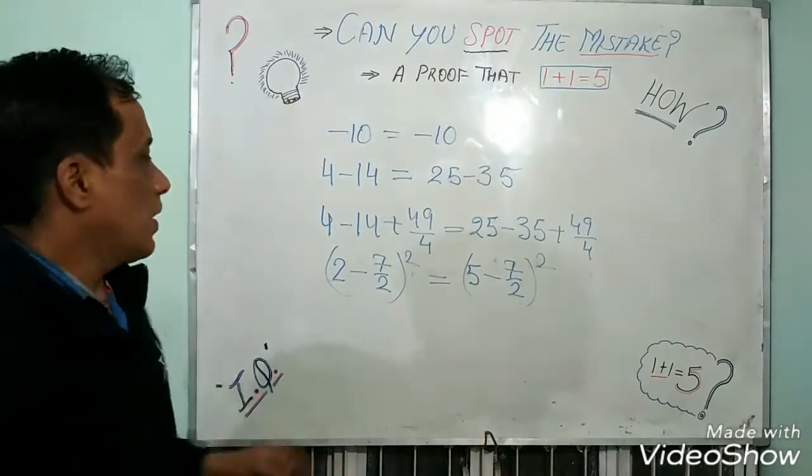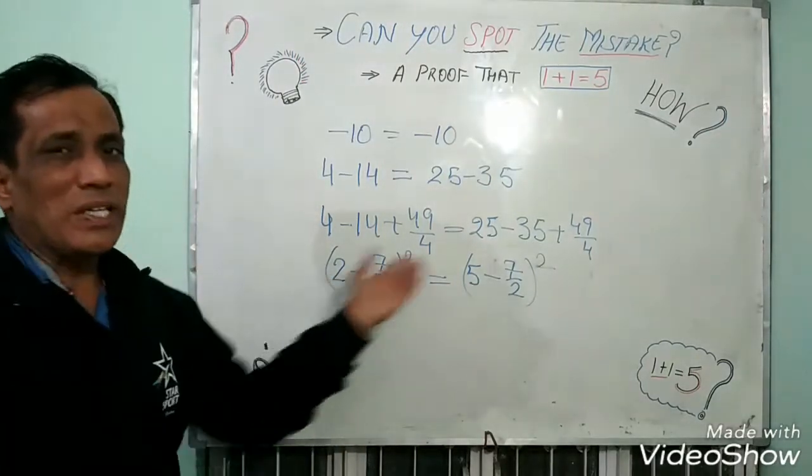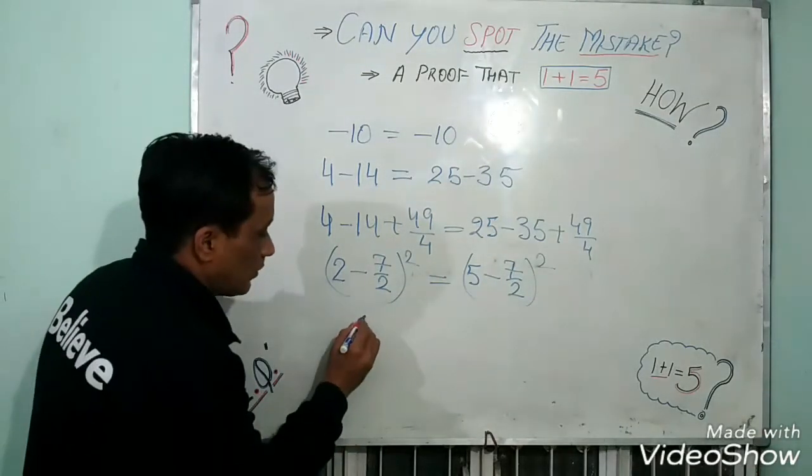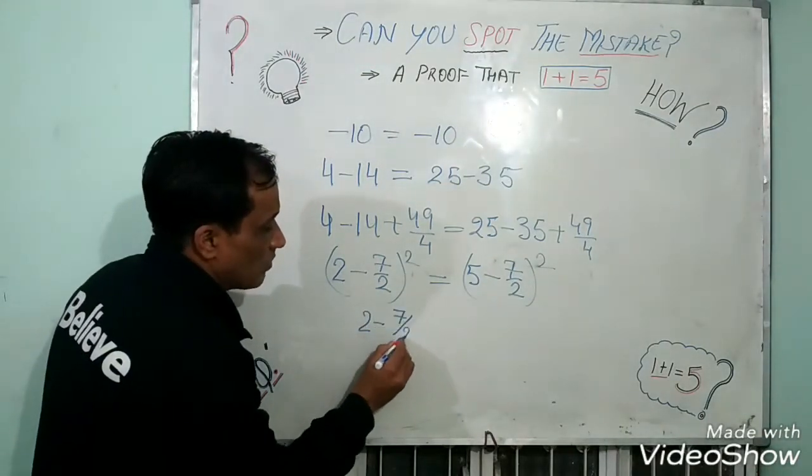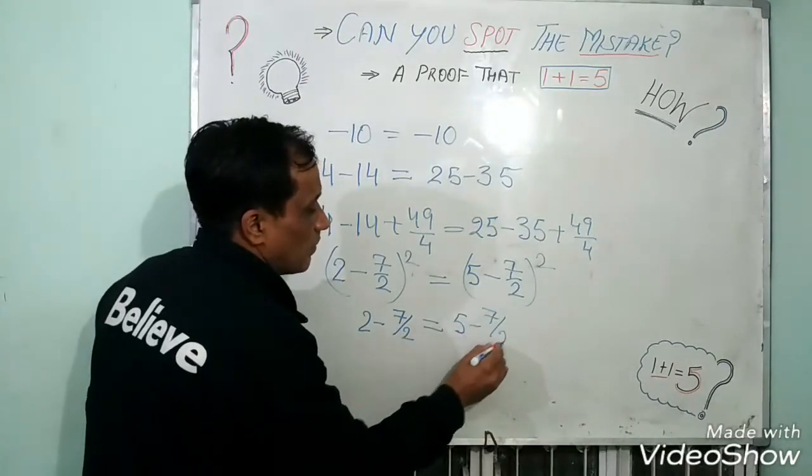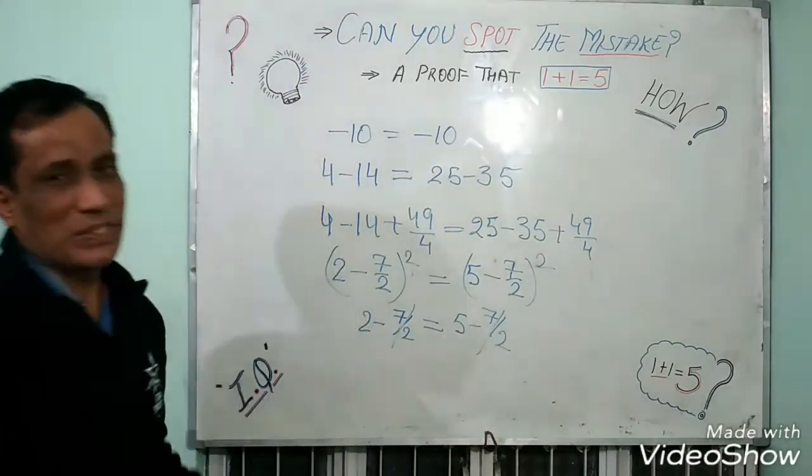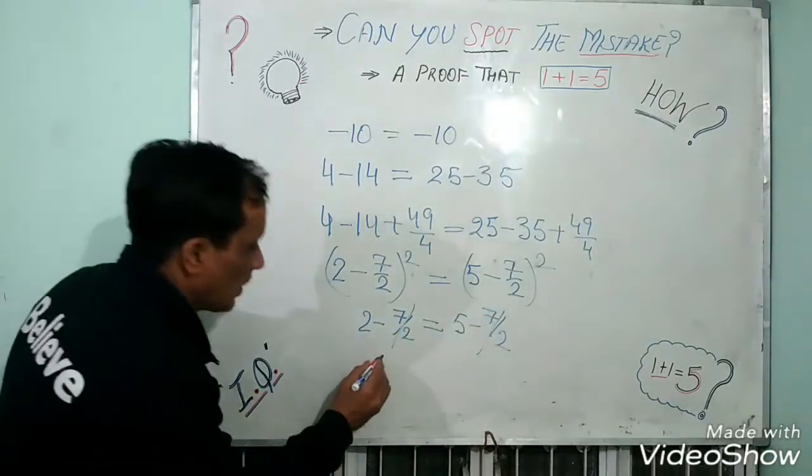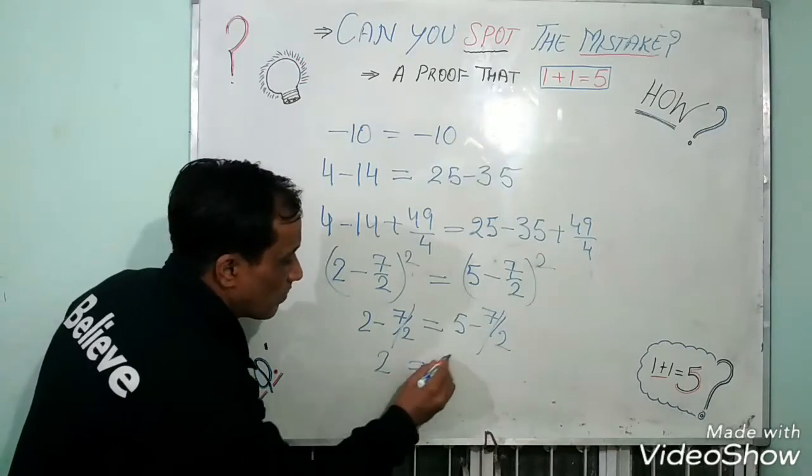Completing the square. If I am adding 2 sides to the square root, means taking the square root on both sides, this will be 2 minus 7 by 2 is equal to 5 minus 7 by 2. 7 by 2, 7 by 2 is equal to 5, left hand side and right hand side. Same change cancel. Means 2 is equal to 5.